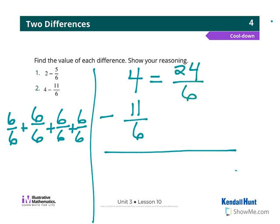Now that they have the same denominator, I can simply subtract my numerator. So 24 minus 11 is 13, and I keep my denominator of 6.